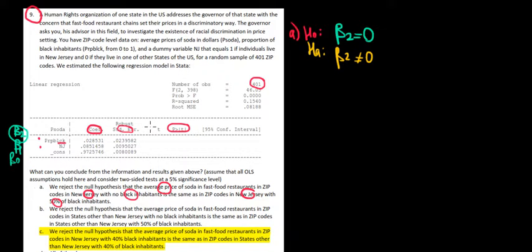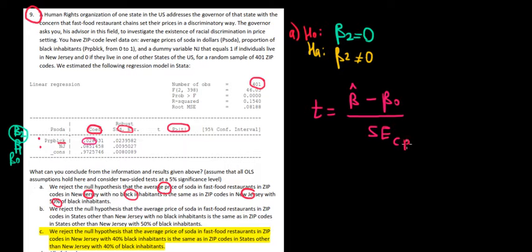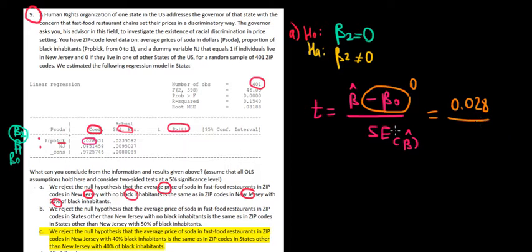To test this, we calculate a t-value. The sample coefficient is 0.028, and the t-test is the difference between the sample coefficient and the null hypothesis value of 0, divided by the standard error. So that's 0.028 minus 0, divided by the standard error of 0.024, which gives a t-value of approximately 1.18.